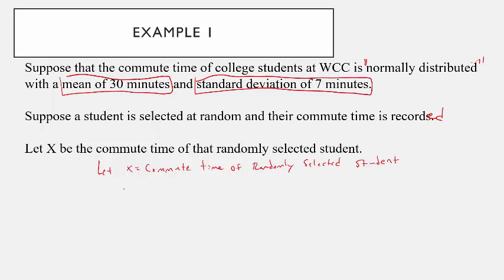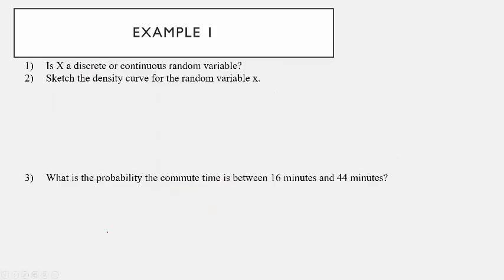Here's what we know: X is approximately normally distributed. We know that the average commute time is 30 minutes, and we know the standard deviation is 7 minutes. The first question is: is X a discrete or continuous random variable? Since it's time, X is a continuous random variable.